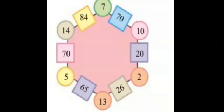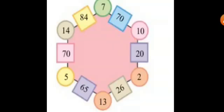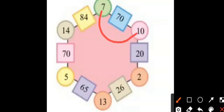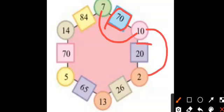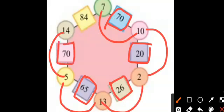Let us understand this number pattern. A hexagon shape is given. Taking one side — three numbers are given in which we multiply the numbers given in the circles and write the answer in the square box. So 10 × 7 = 70, 10 × 2 = 20, 13 × 2 = 26, 13 × 6 = 78, 14 × 5 = 70, 14 × 7 = 98.